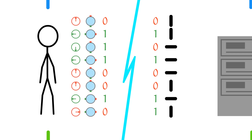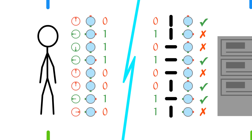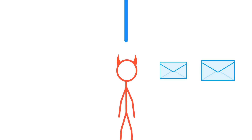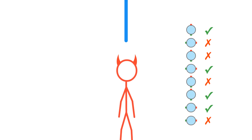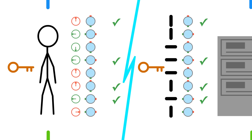Now, you have your own random string of 1s and 0s, but it's not exactly the same as the server's string because of your wrong guesses. To throw out the useless bits, you and the server compare the orientations you used for each bit and throw out the mismatches. Even if an eavesdropper drops in to peek at the orientations, they won't know what the measurements were. Now, you and the server each have copies of the same key, that you can both use to scramble and unscramble messages.